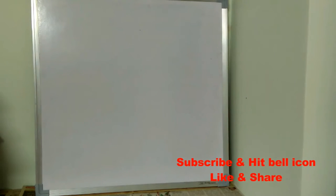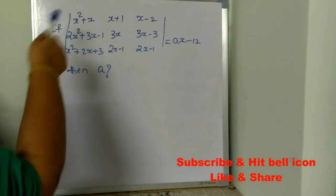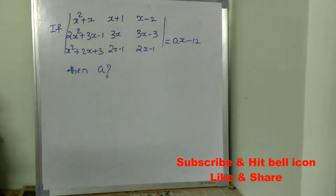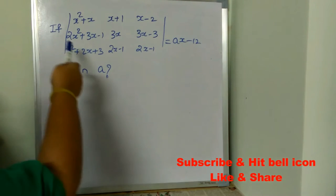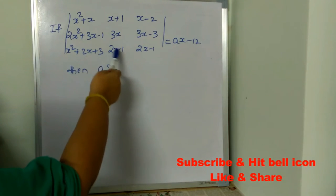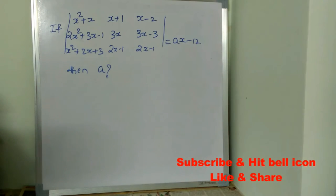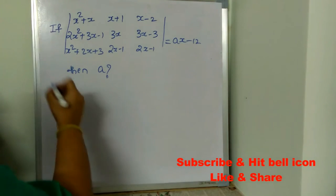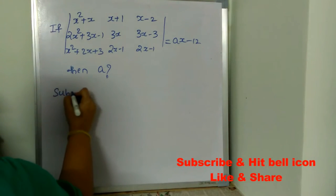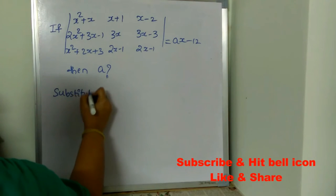Now let's see cheat code for matrices. The question is, if x squared plus x, x plus 1, x minus 2, 2x squared plus 3x, 3x minus 3, x squared plus 2x plus 3, 2x minus 1, 2x minus 1 is equal to A times x minus 12, then what is the value of A? Now what we need to do is just substitute x is equal to 1.